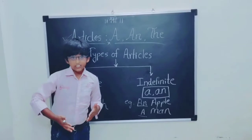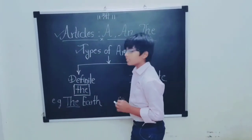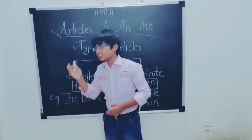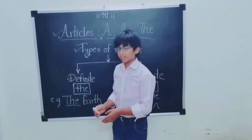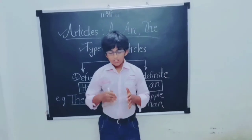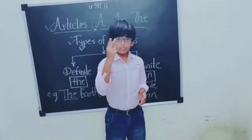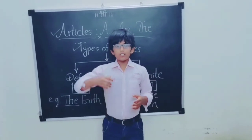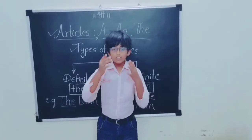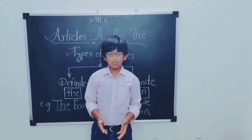Now definite articles — in the definite article there is the word 'the.' We use 'the' because it tells us about a particular thing. 'Definite' means we are talking about a particular thing, either the second time we mention something in a sentence or paragraph, or when a word is only one of its kind.